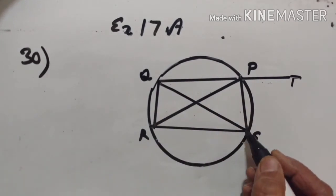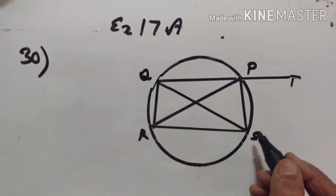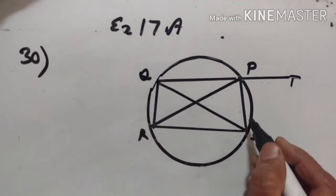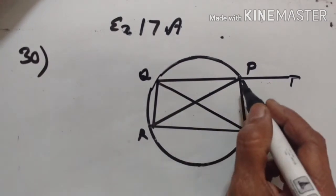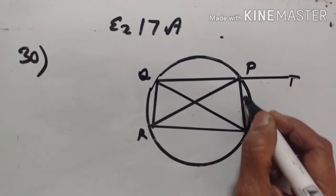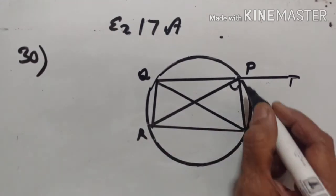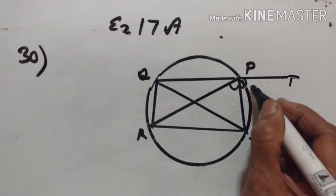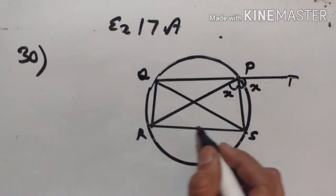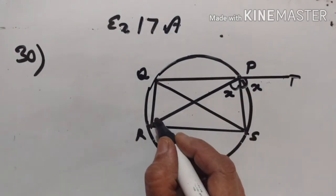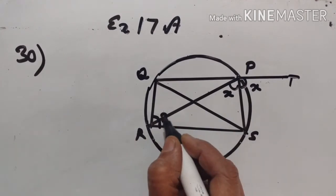We have to prove that SQ is equal to SR. It is given that SP is the bisector of angle RPT. This means angle SPR is equal to angle SPT. Let them both be X. Now, the exterior angle of a cyclic quadrilateral is equal to the interior opposite angle. Therefore, angle QRS is also equal to X.